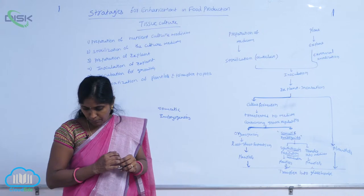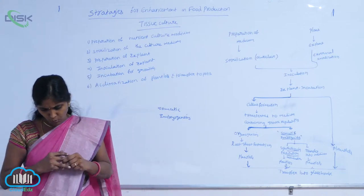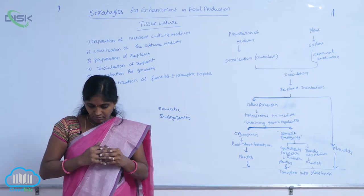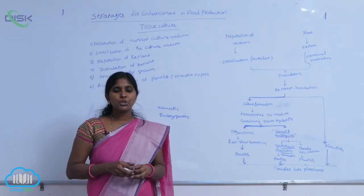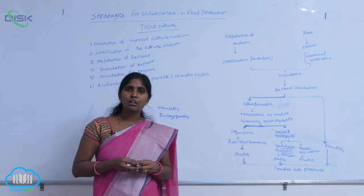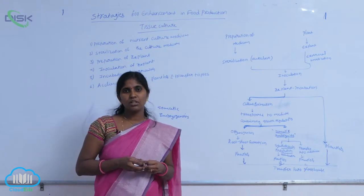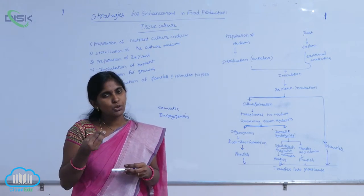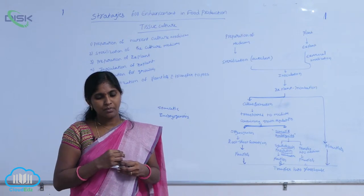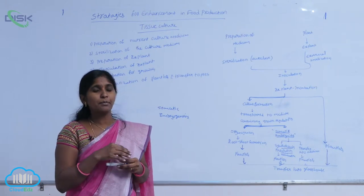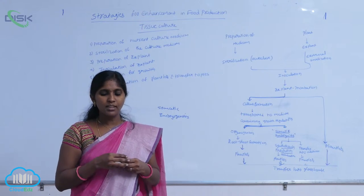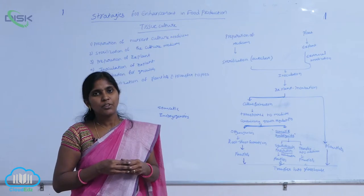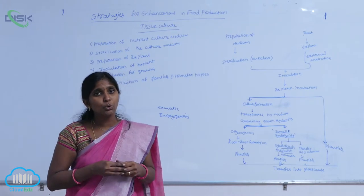Here, soma clones are produced. Soma clones are genetically identical plants. By applying tissue culture techniques, there is a possibility of high production within a short time and within a small space. This means a large number of plants can be produced in a limited place and short time — this phenomenon is called micro-propagation.